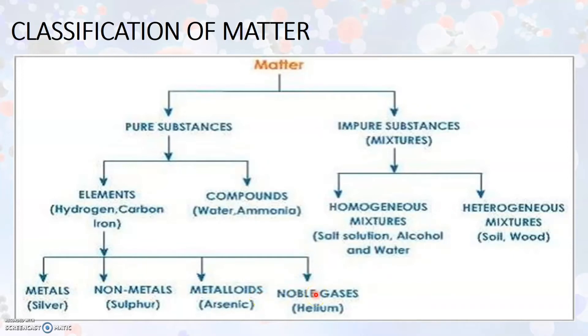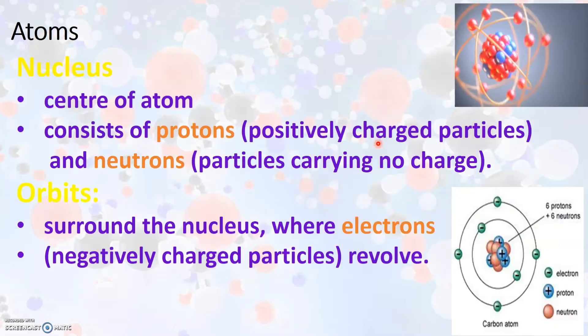Before we go in to see what pure substances and impure substances are, let us have a quick look at what is an atom. We have already learned that an atom is the basic unit or the smallest particle present in an element. An atom is not capable of independent existence; otherwise we say that atoms are the building blocks of all matter.